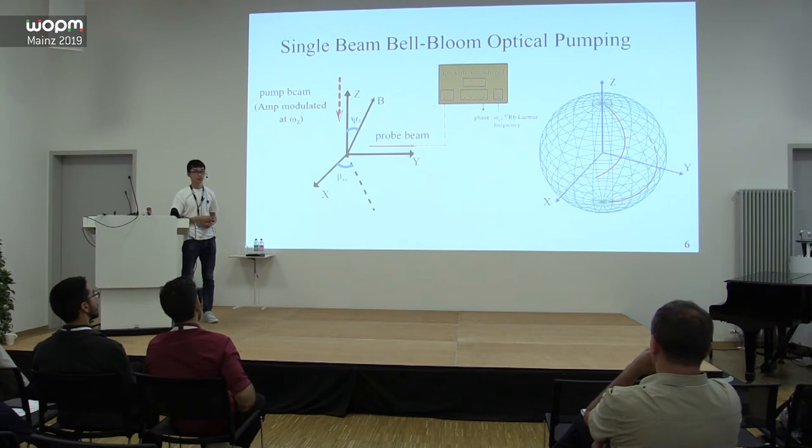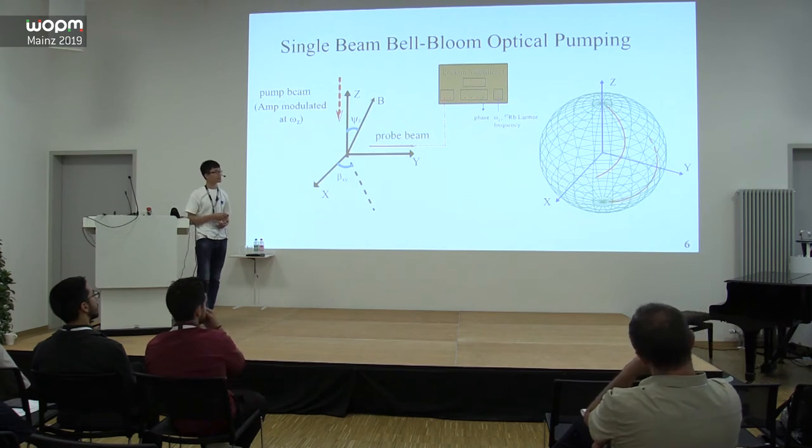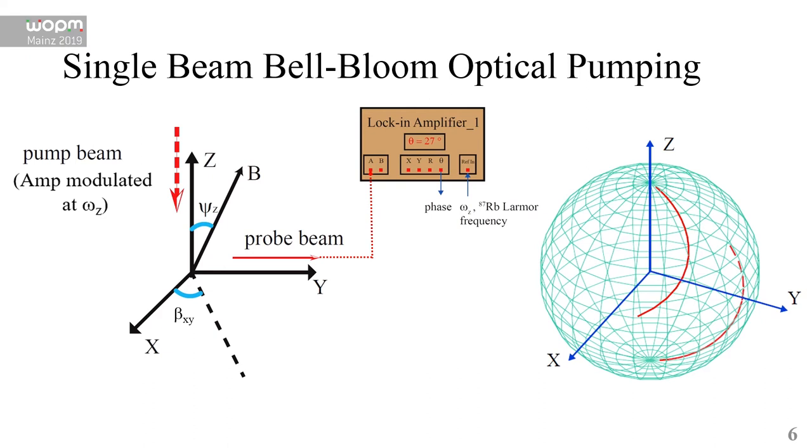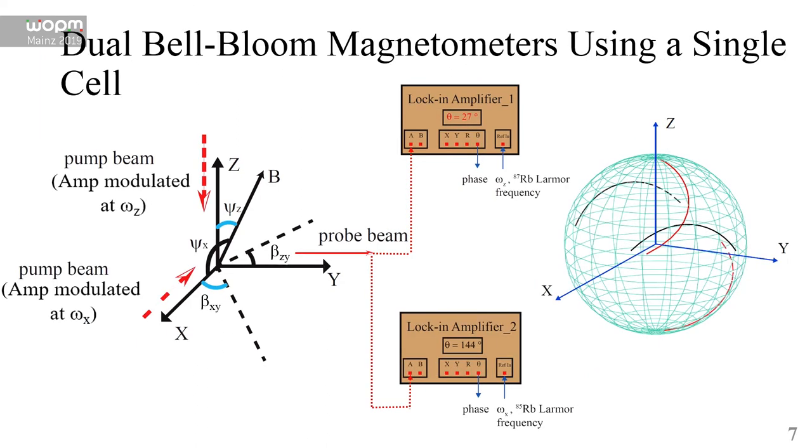In order to know the exact magnetic field direction, we just need another curve to make a cross with the red curve. To get the other line, we need a second Bell-Bloom pumping beam which is perpendicular to the former one. This is why we use dual beam optical pumping.